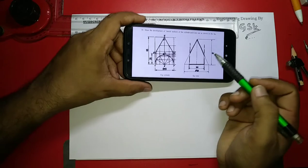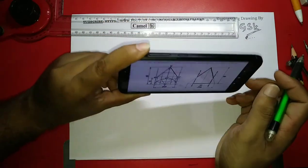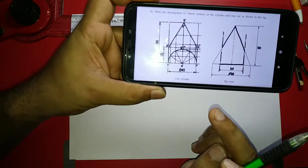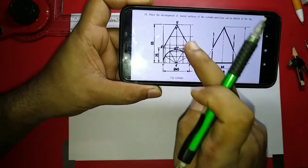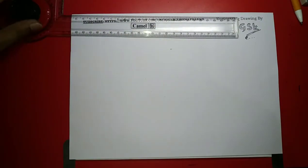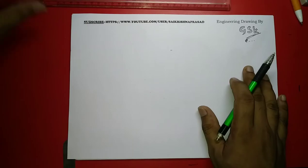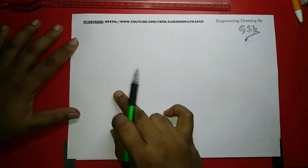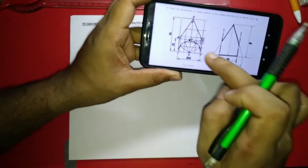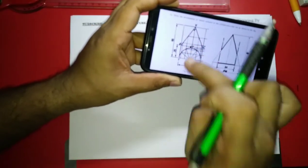For this, first we have to draw the developments onto paper - the two-dimensional structure - then we can go for developments. I have already drawn this full structure onto a paper.